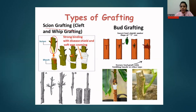In bud grafting, a small cut is made into the stem of the plant in the shape of a T. In the flap of the T, the bud is placed properly and covered and tied with a small band or tape. From this particular area, the new plant starts growing.